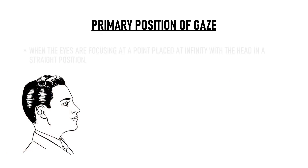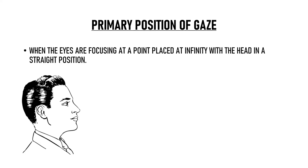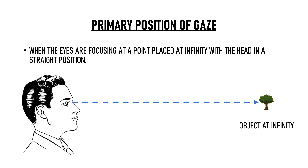Primary position of gaze is when the eyes are focusing at a point placed at infinity with the head in a straight position. In optics, the distance of 6 meters is considered as infinity, so primary position is the position of gaze when the eyes are focusing at a point which is 6 meters away in the straight direction.